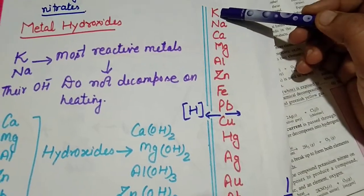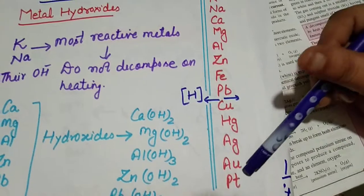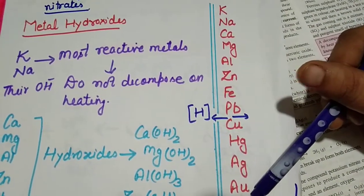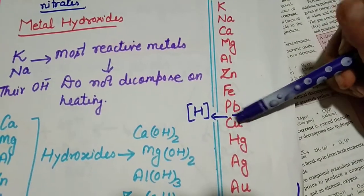The metal at the top is the most reactive, and the one at the bottom is the least reactive. In between we have hydrogen.